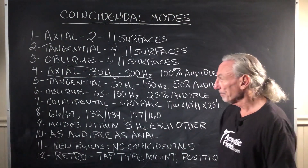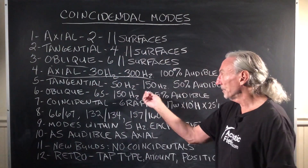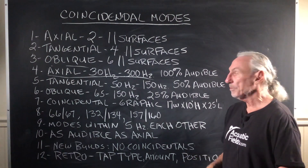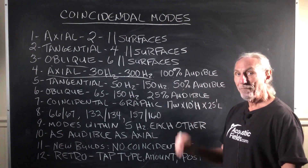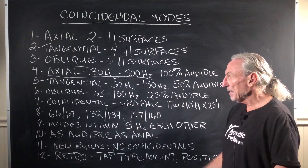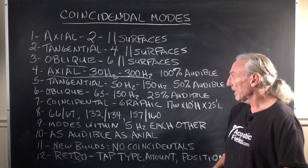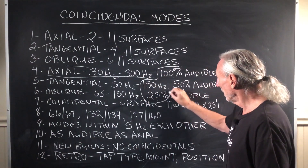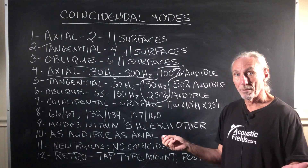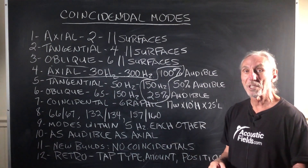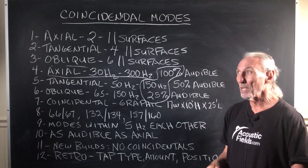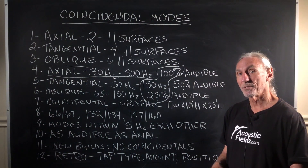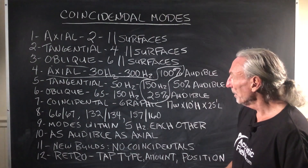Tangential modes, between four parallel surfaces, typically 50 to 150 cycles — it'll vary, but that's a pretty good range. About half of those are audible. Then the oblique, 65 to 150 cycles, about 25% are audible. So here's your audibility across all of these — it's distortion that you hear, and we don't want it. It's room distortion, room speaker, if you will — it's telling us what it's going to sound like.